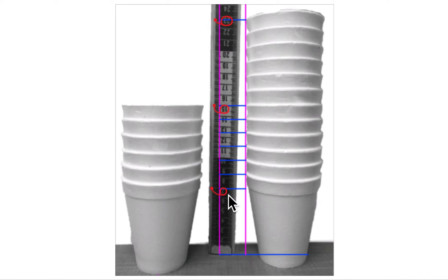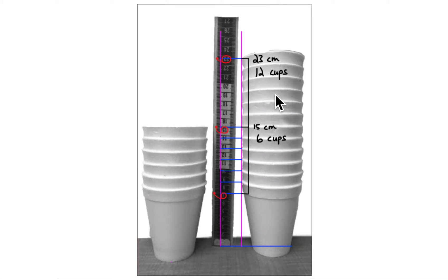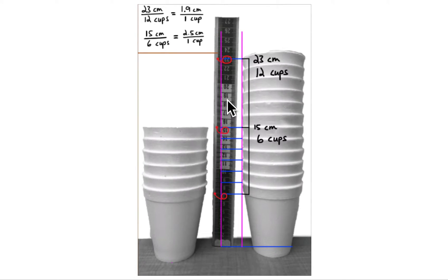Starting at seven centimeters, six cups gets you to 15 centimeters. Doubling to 12 cups does not double the centimeters — it only goes to 23. But if you just look at the eight centimeters added by the six rims, then adding another six rims gives another eight centimeters — that part does double. Going from six to 12 cups, the rim height goes from eight to 16 centimeters.